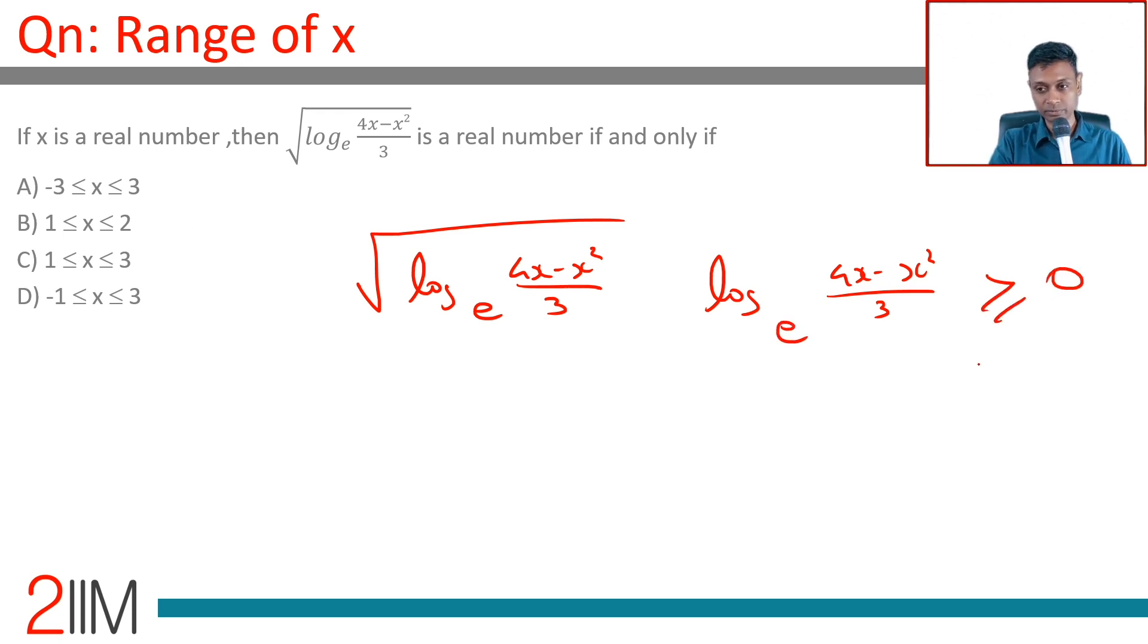Only then can we find the square root. Now let's go to the next step: log of something is greater than or equal to 0, so that something—(4x - x²)/3—should be greater than or equal to 1. Log_e(1) is 0, and for anything more than 1, the log of that number will be greater than 0.